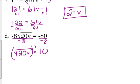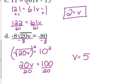Now, we square both sides. So, we get 20v is equal to 100. Divide by 20. V is equal to 5. You can check it very easily. 20 times 5 is 100. Square root of 100 is 10. 10 times negative 8 is negative 80.